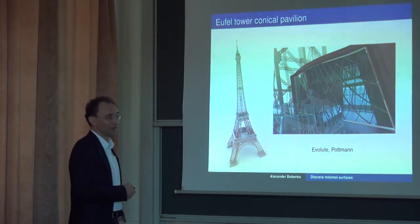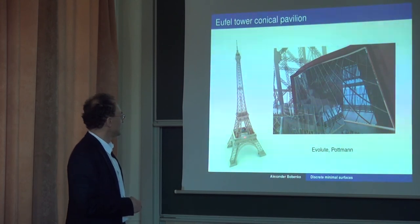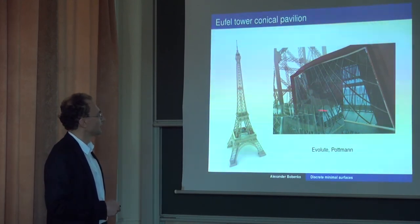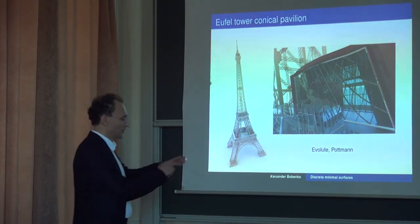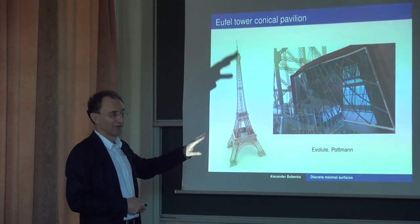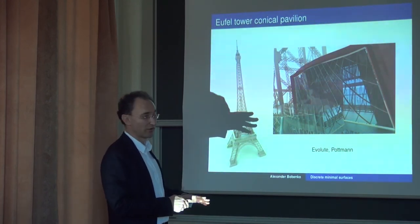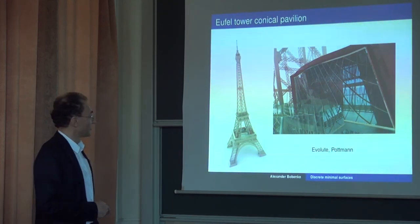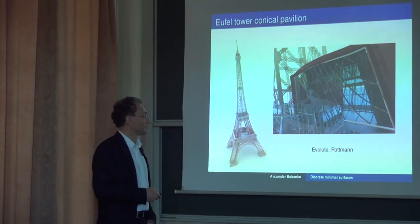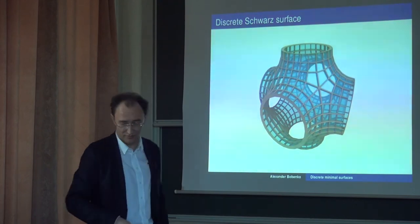You all know this building, and now there is an interesting construction being built on its first floor: a pavilion where the glass pieces build a conical surface. If you go to applications you should get rid of strict integrability, but some geometric properties are preserved — the property of the surface to be conical or of Kerby type. These surfaces are constructed essentially variationally, and some parts of this theory are used there. Thank you very much for your attention.